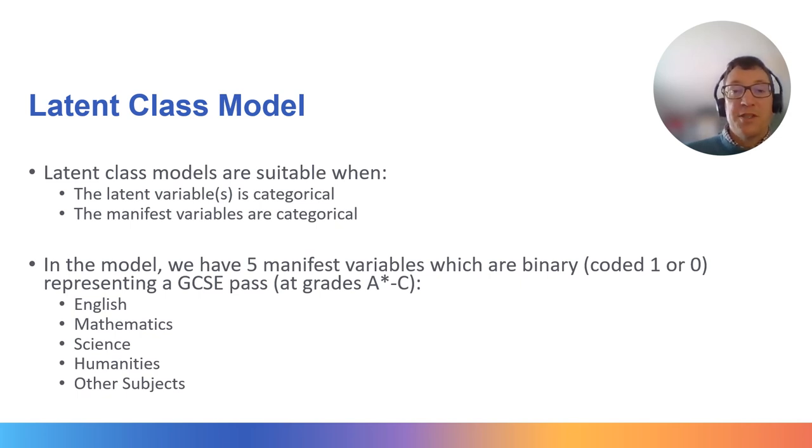Each variable is coded as a binary variable, one or zero, where one indicates a pass at grades A star to C and zero otherwise, based on general certificate of secondary education qualifications taken by school pupils in 1992.